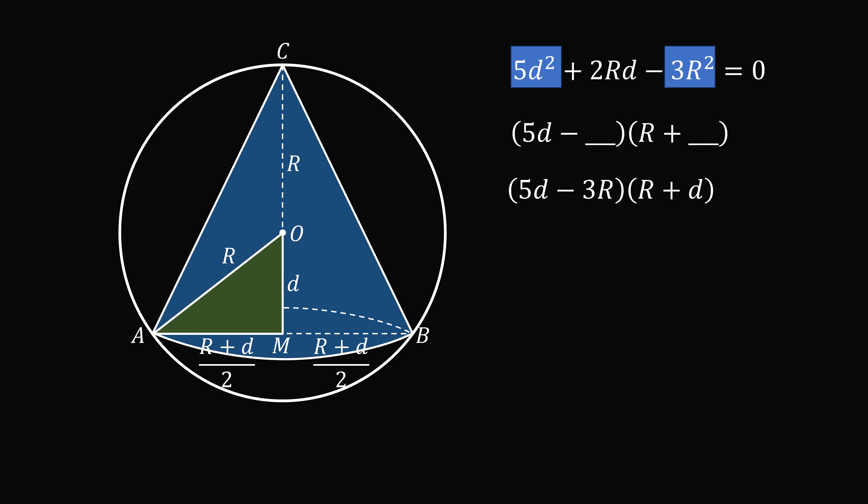So this must be 5d minus 3R multiplied by R plus d. Expanding this out, this does exactly match the original equation. So this is what it factors into.